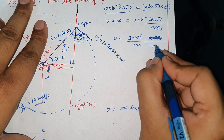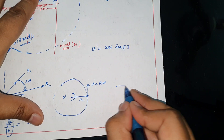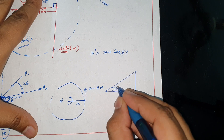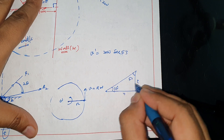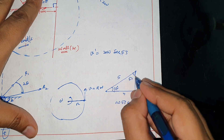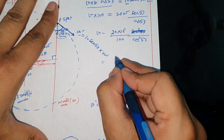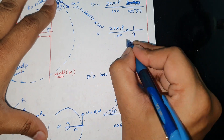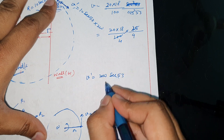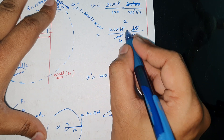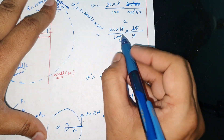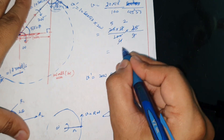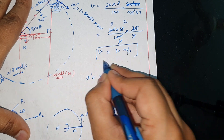Now from below, divide by cos² 53°. Using the 3-4-5 triangle: if 37° is here, then 53° is here, with sides 3, 4, 5. So cos 53° = 3/5. Then V = 20ω × sec²53° / 100. Substituting ω = 18: V = 20 × 18 × (25/9) / 100 = 900 × 4 / 900 = ... solving gives V = 10 meters per second.